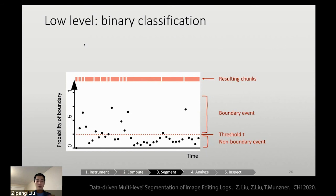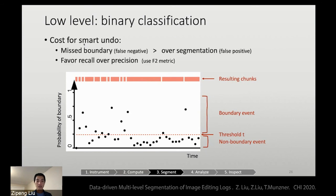When trying to decide where this threshold should be, we consider the cost for smart undo, which is our targeting task. We think that the cost for missed boundaries is larger than the cost for over-segmentation. Think about if you have over-segmentation, the user will need to issue multiple smart undos to reach his desired point. But if you have missed boundary, it's harder for the user to go back inside a chunk to find the exact point he wanted. So that means we're favoring recall over precision. And we've used F2 metric to find a sweet spot for the threshold.